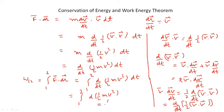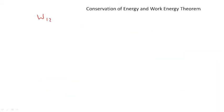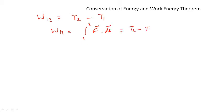Evaluating the integral gives W12 equals ½ m v2² minus ½ m v1², which is T2 minus T1. So the result is: W12 equals the integral from 1 to 2 of F dot dr equals T2 minus T1. This is known as the work-energy theorem.